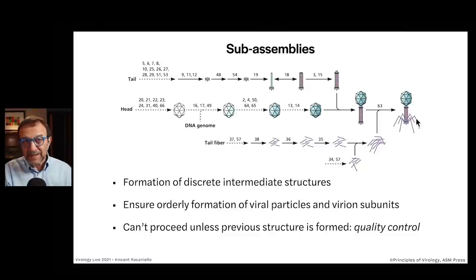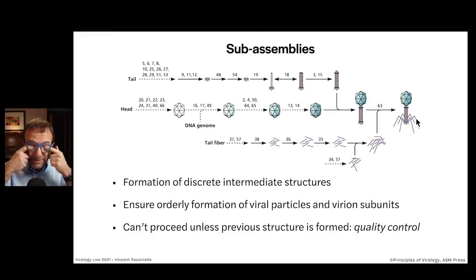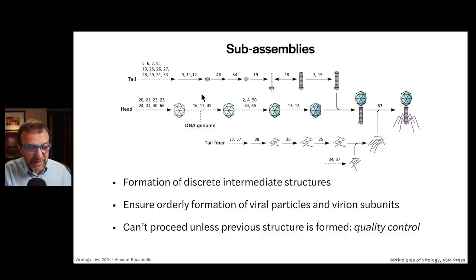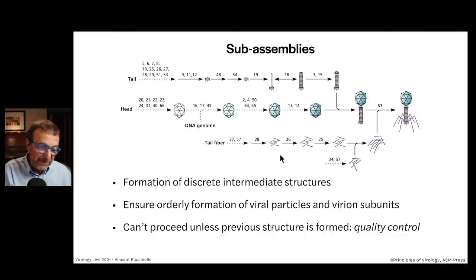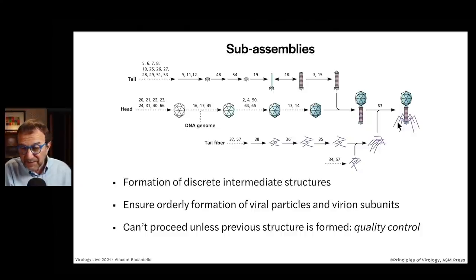This is kind of like an assembly line for a car. The reason this is done is that it ensures orderly formation of the particles. I think the most important reason is that it enables quality control. If you make a defective tail at the beginning, it never gets into the virus particle. If it folds improperly, it will be taken out of this assembly line. Quality control is really the reason to have sub-assemblies — if you put it all together at once, you'd have a final particle with a defective protein. This way, you eliminate defective proteins along the way, by chaperones that sense misfolding and direct them to degradation pathways.